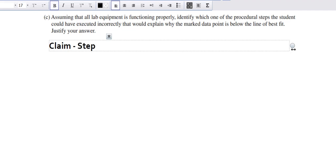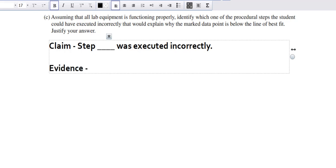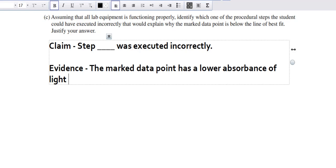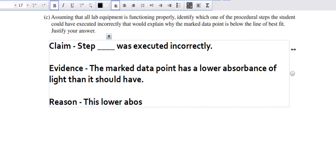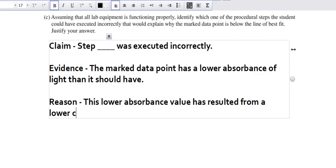So step something was executed incorrectly. That's my claim. What is my evidence? My evidence is the marked data point has a lower absorbance of light than it should have. And what does this mean? This means this lower absorbance value has resulted from a lower concentration.